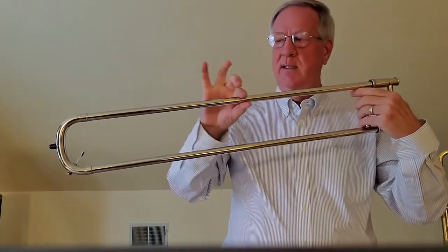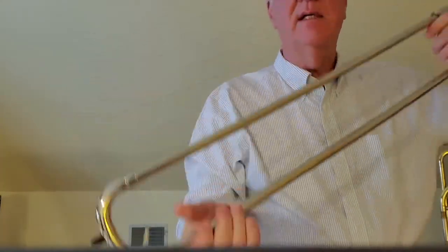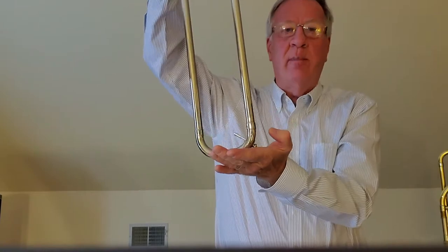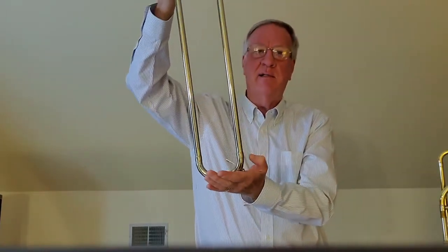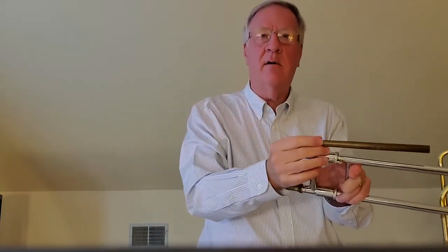Parts of the slide. These are the outer slides. Inside are the inner slides. This is the crook. This is the spit valve. Does exactly what it says. Down here is a rubber bumper, which is important because when you hold the trombone and you're sitting in a chair, that rubber bumper sits on the floor and prevents the slide from doing this, from spinning. Also, the lead pipe.